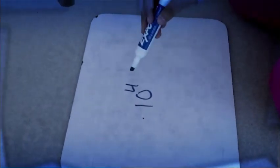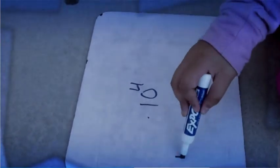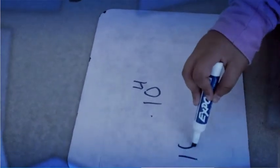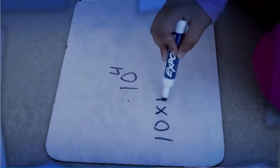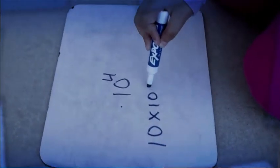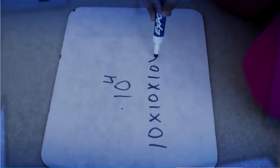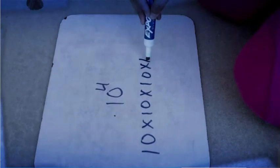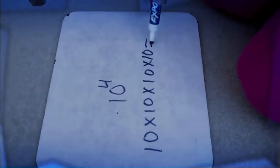The exponent tells how many times to multiply 10. So 10 times 10 times 10 times 10 equals 10,000. And that's what exponents are about.